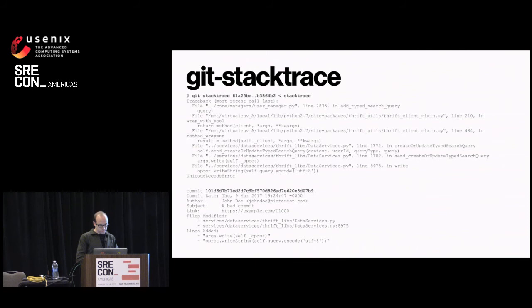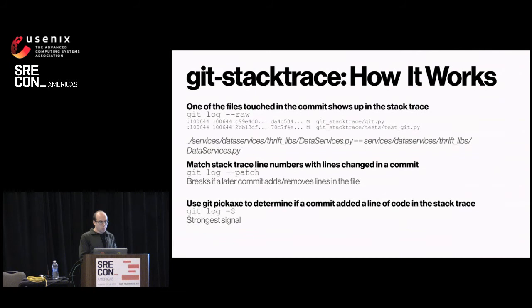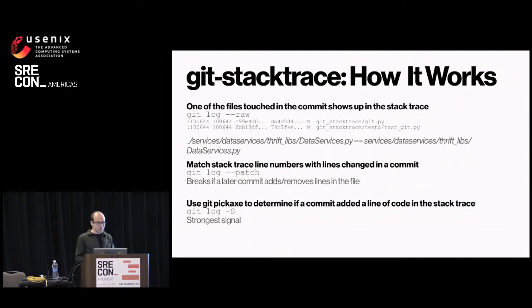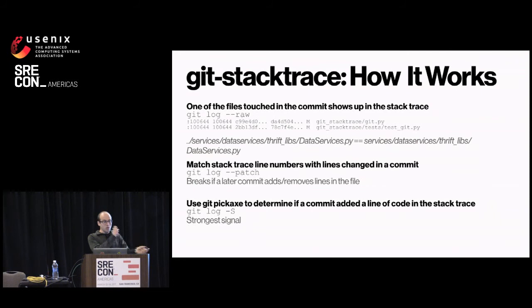Here's how it actually works. For the first signal — a file touched in a commit showing up in the stack trace — we use 'git log --raw', which shows all files a commit touched in a computer-readable format, including whether they were modified, added, or removed. One challenge is mapping the stack trace's file name notation to the actual git repo notation — for example, mapping 'services.services' back to 'services', or in Java mapping 'com.pinterest.whatever' back to the git repo path.